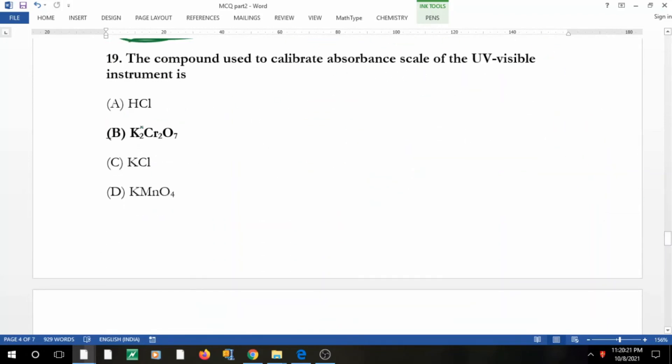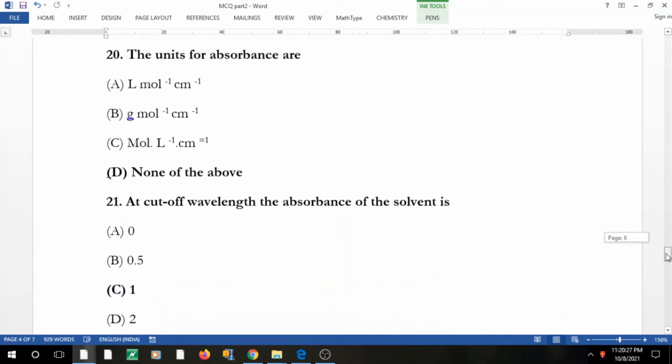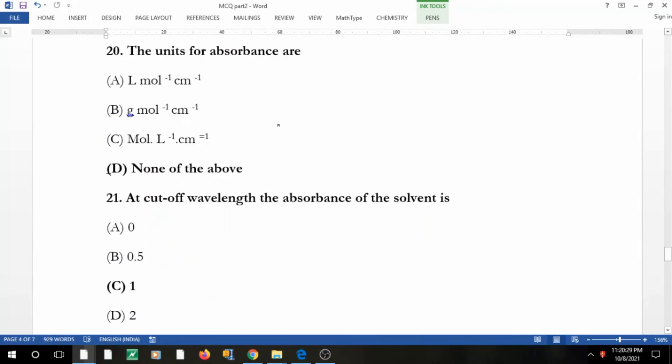Coming to the next question: the compound used to calibrate absorbance scale is potassium dichromate, definitely. Before that, if you have understood the questions well, please hit on like—that gives me motivation. And if you are new to my channel, please do subscribe for more such videos.